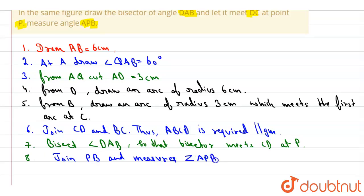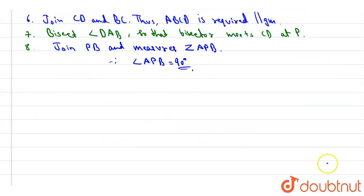Therefore angle APB is 90 degree. So now we will construct with the help of these steps. This is the required diagram as follows.